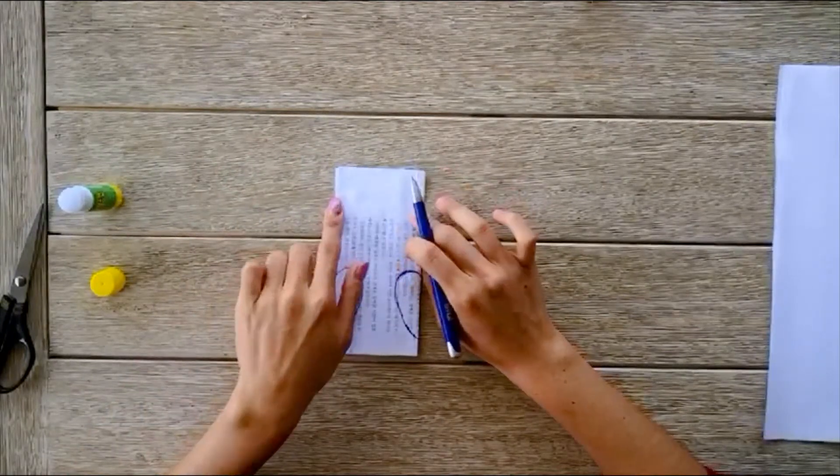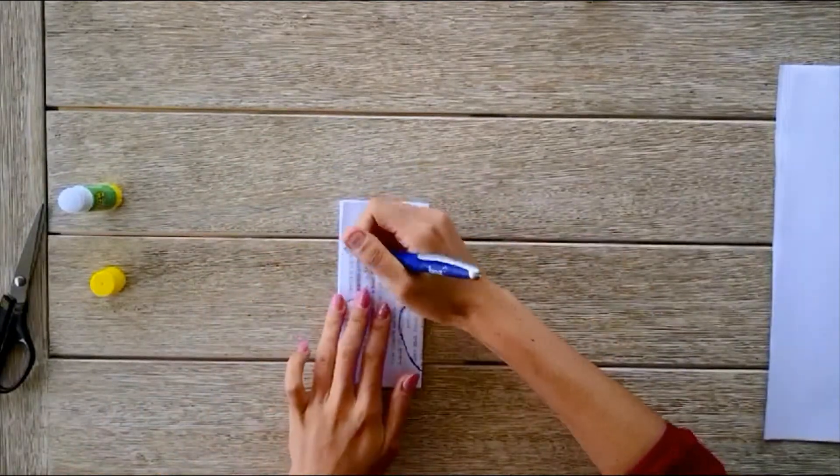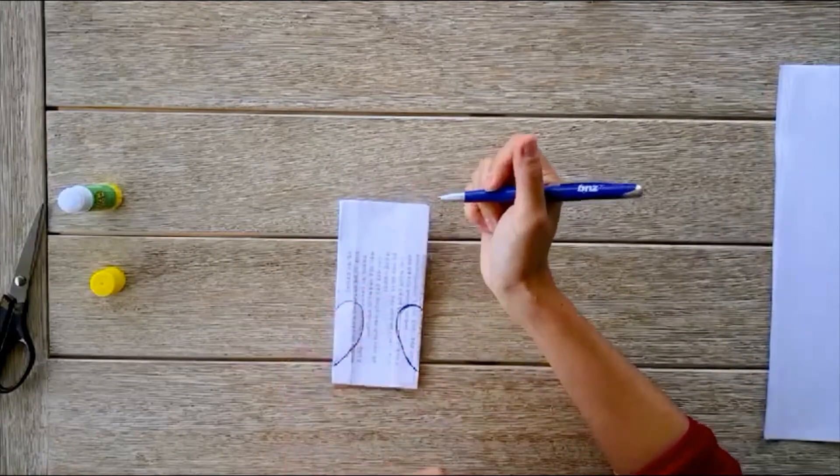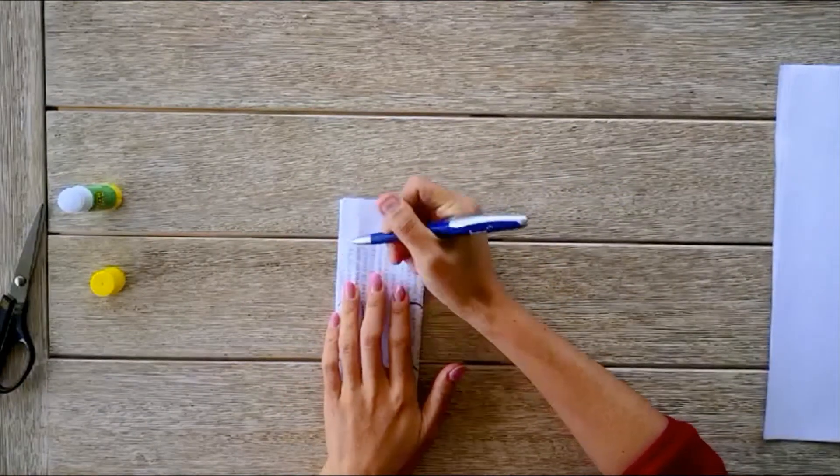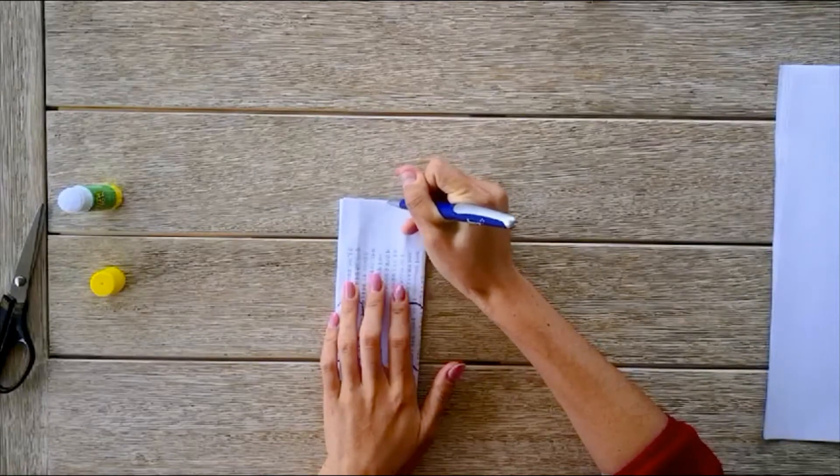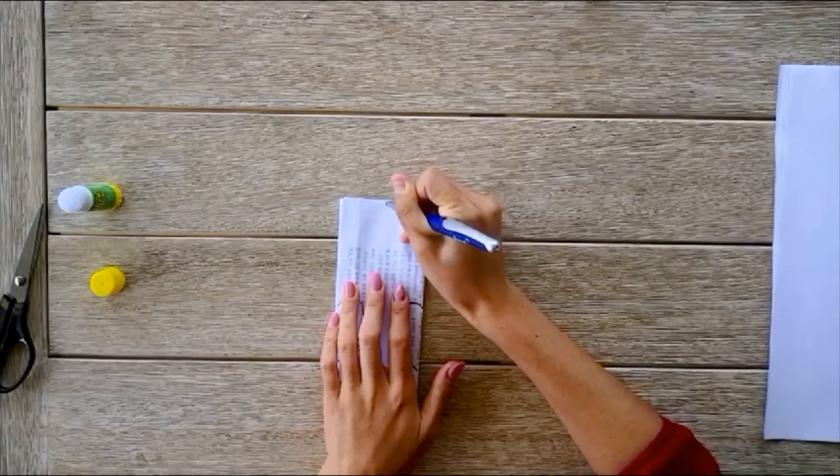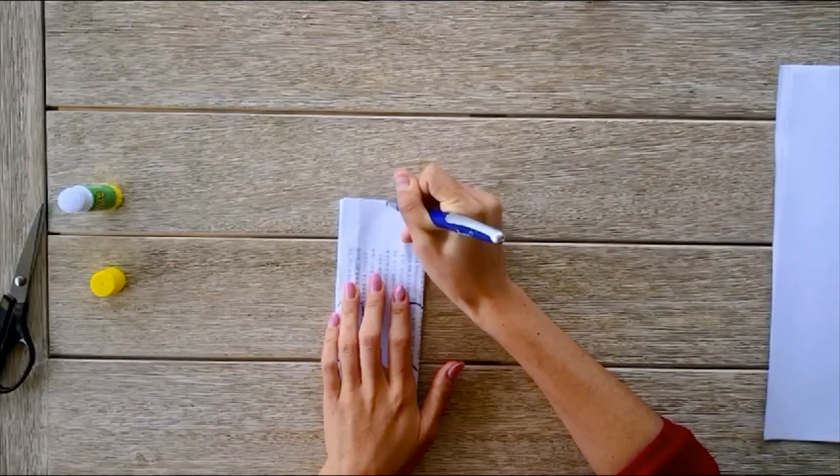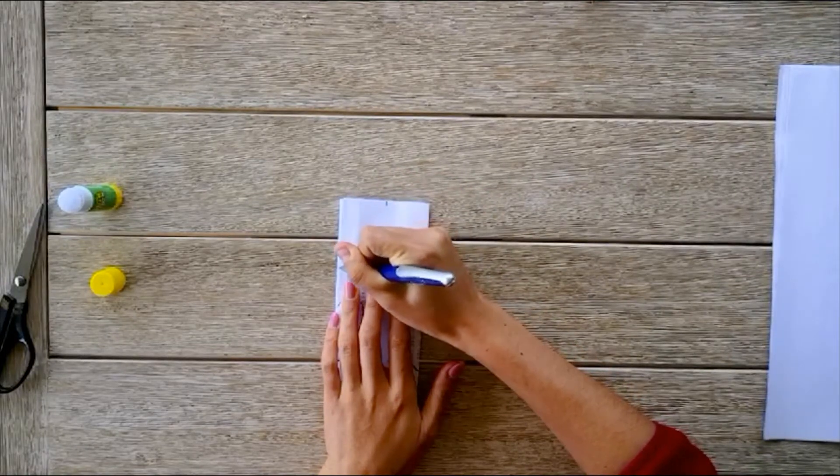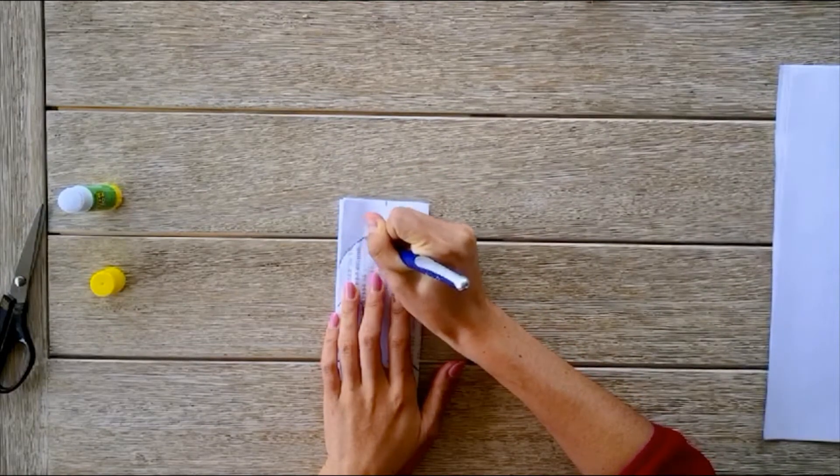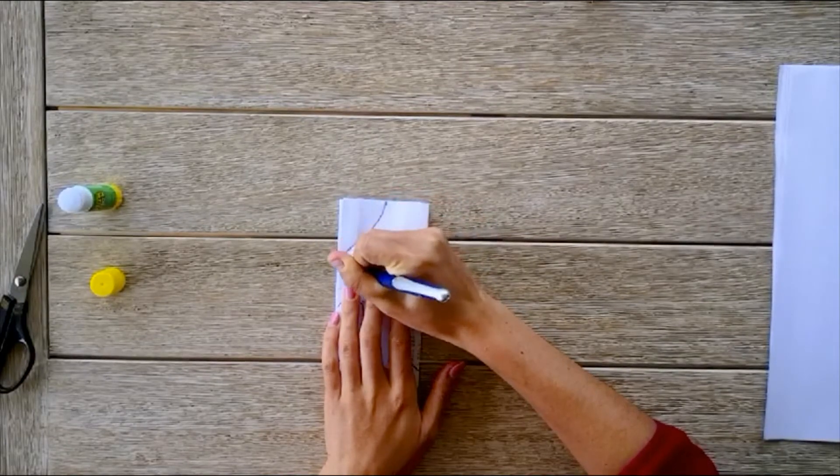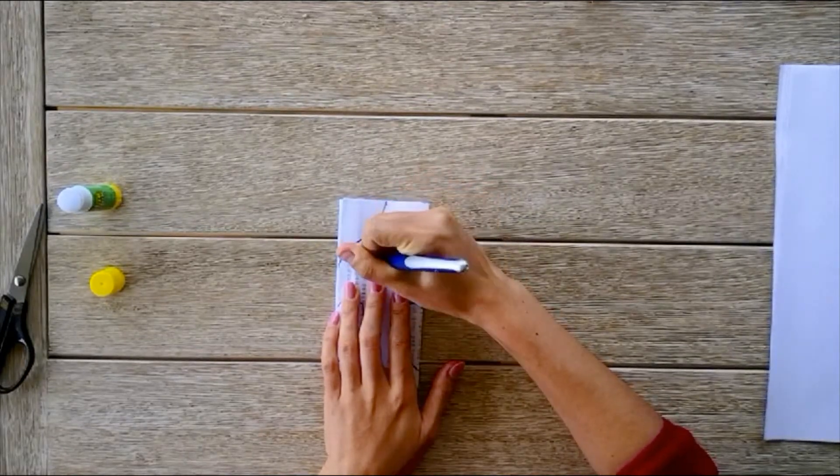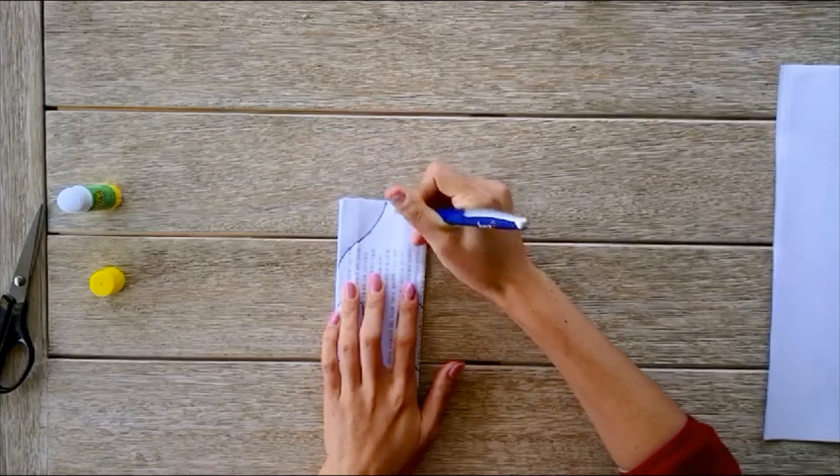And then on the top here, I am going to draw a quarter heart. So I am going to start from somewhere right here. If this is the middle, I am going to draw all the way to the middle. It is like the bottom side of the heart.